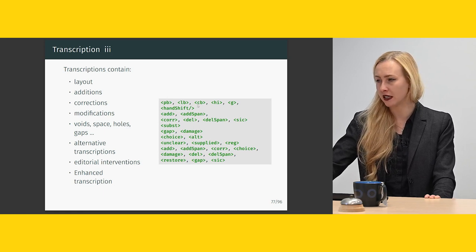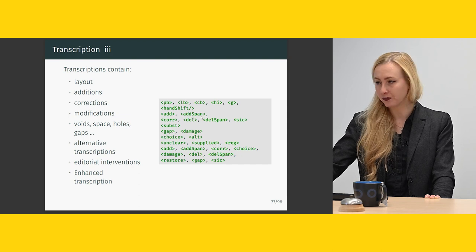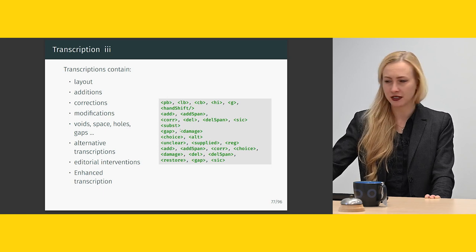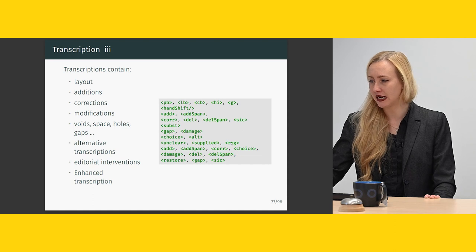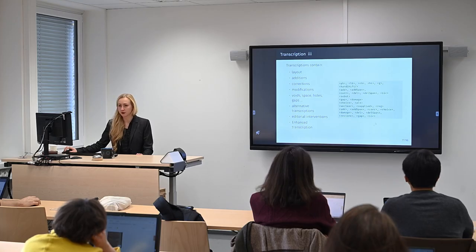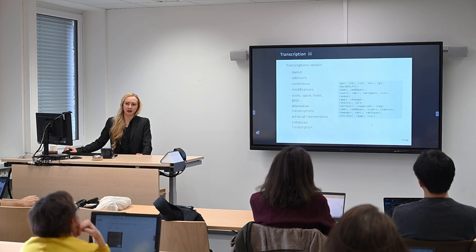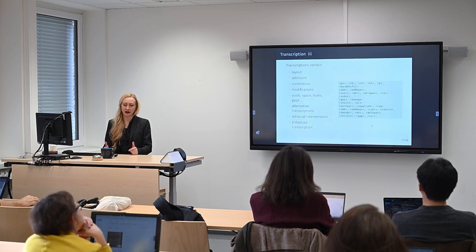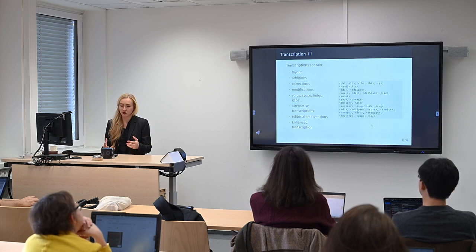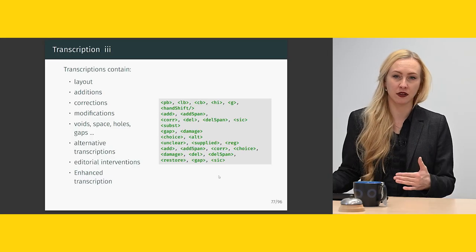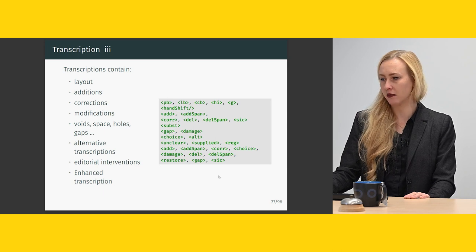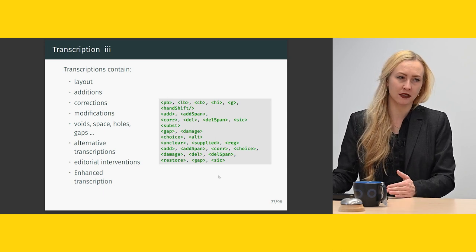Some of the relevant elements are: page beginning, line beginning, column beginning, highlight, glyph, hand shift, addition, addition span, correction, deletion, deletion span, 'sic', substitution, gap, damage, choice, alternative, unclear, supplied. If this is something you particularly care about — for example, somebody doing a genetic edition — they might be very interested in this. A genetic edition looks at how a text came to be, tracing the ideas of the author and how they ended up with the final solution. For most of us, we wouldn't excessively use it, but it's good to know these elements exist if you need them.